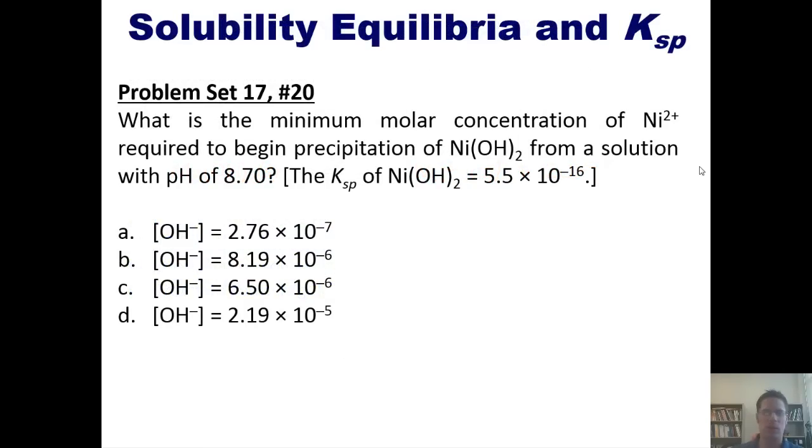All right, let's take a look at a problem. What is the minimum molar concentration of nickel cation required to begin precipitating nickel hydroxide from a solution with a pH of 8.7? The Ksp of nickel hydroxide, just so you know, is this number. As I usually do, you're welcome to attempt this on your own. And then if you like, you can click the link here to a separate video in which I show you how to do it on the board.